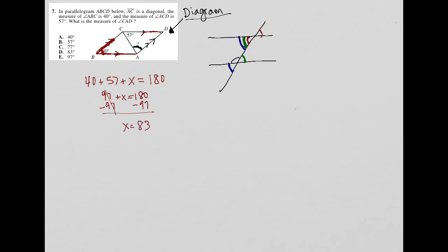And now I know, just to erase this so we can see it clearly, now I know that this is 83. Now, how is that useful for me? Well, if I then focus my attention on these parallel lines, so I have this parallel to this.